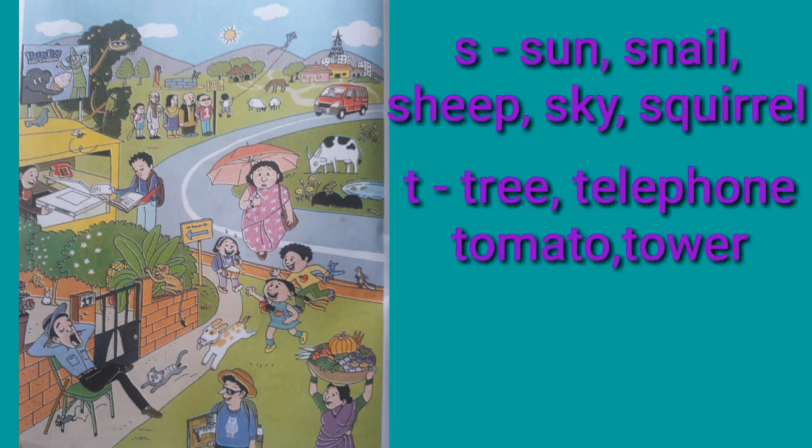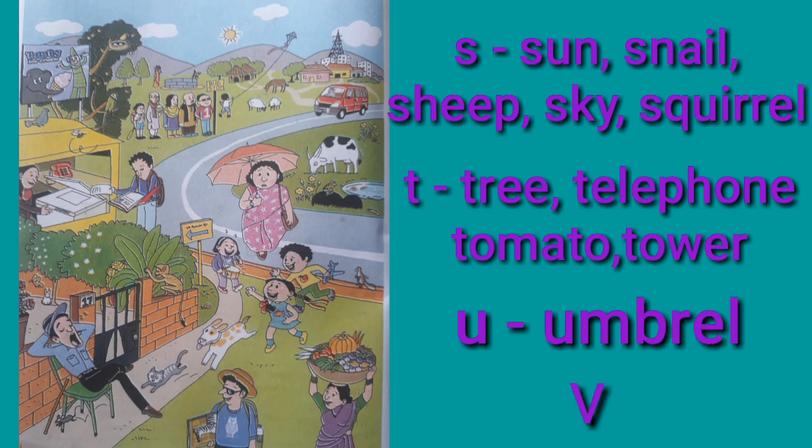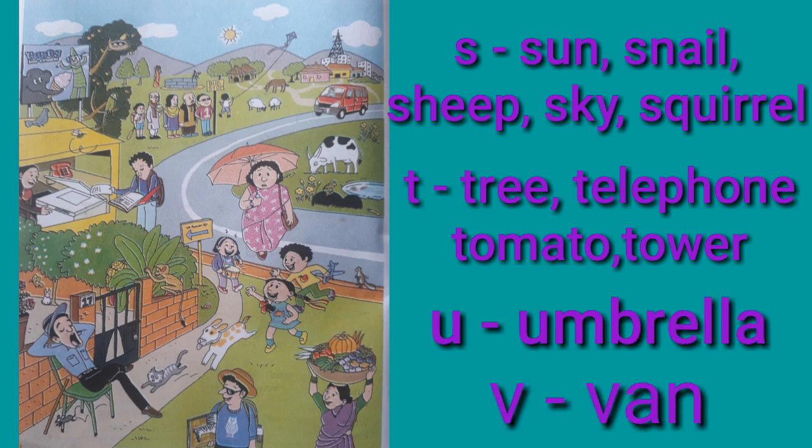From S: Sun, Snail, Sheep, Sky, Squirrel. From T: Tree, Telephone, Tomato, Tower.